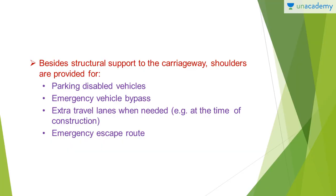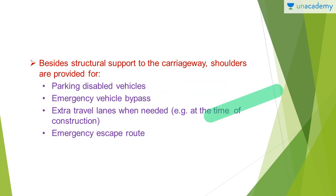Besides structural support to the carriageways, shoulders are provided for parking disabled vehicles, emergency vehicle bypass, extra travel lanes when needed — for example at the time of construction — and even as an emergency escape route in case of a traffic jam or similar situation.